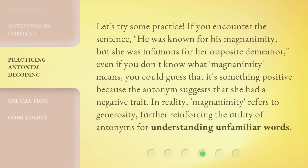Let's try some practice. If you encounter the sentence, 'he was known for his magnanimity, but she was infamous for her opposite demeanor,' even if you don't know what magnanimity means, you could guess that it's something positive because the antonym suggests that she had a negative trait. In reality, magnanimity refers to generosity, further reinforcing the utility of antonyms for understanding unfamiliar words.